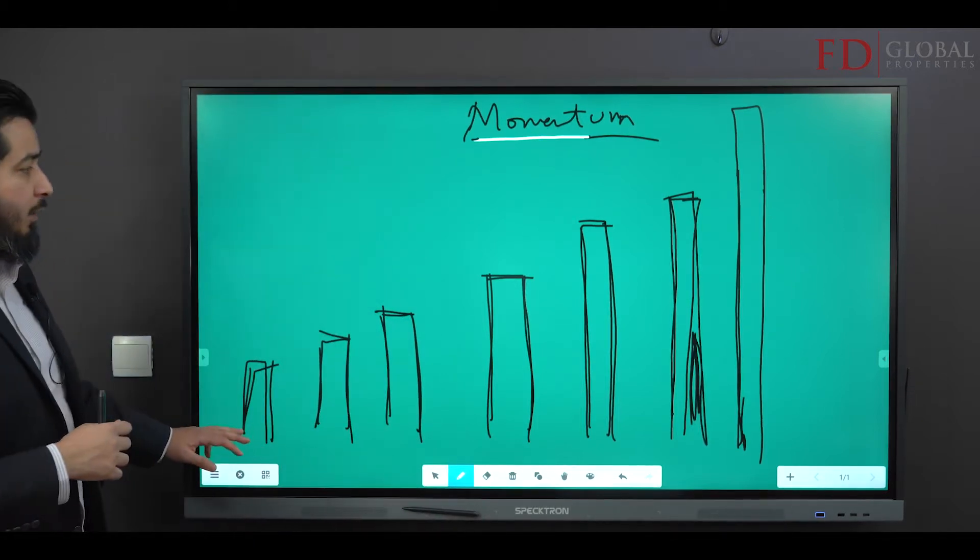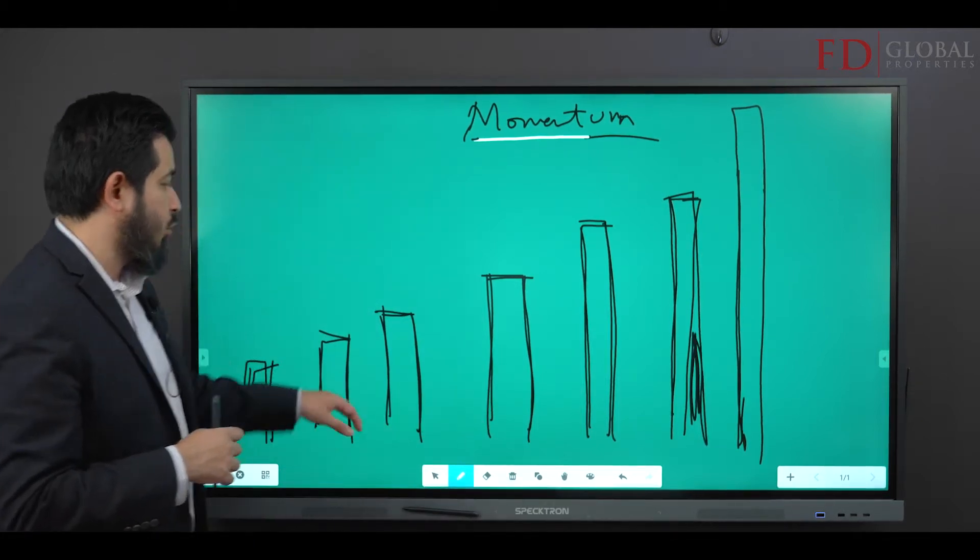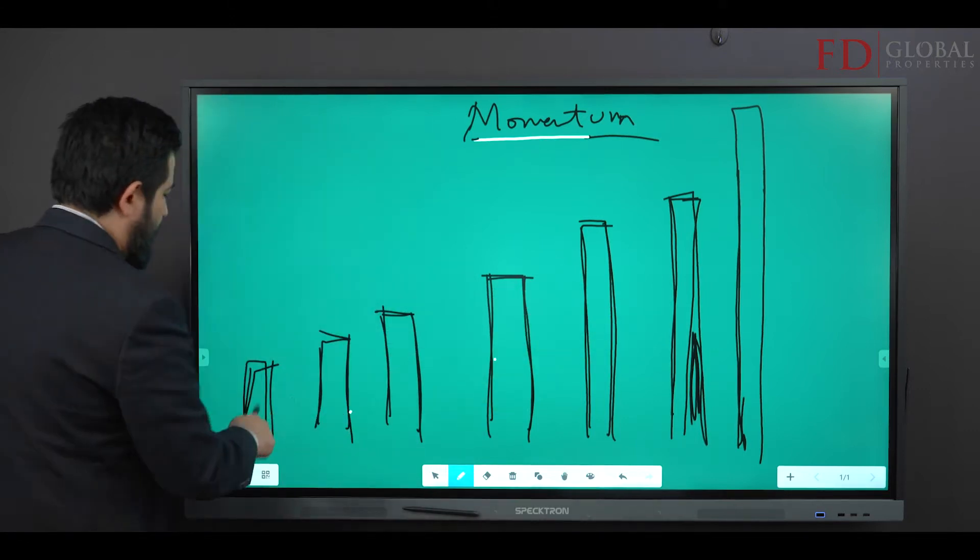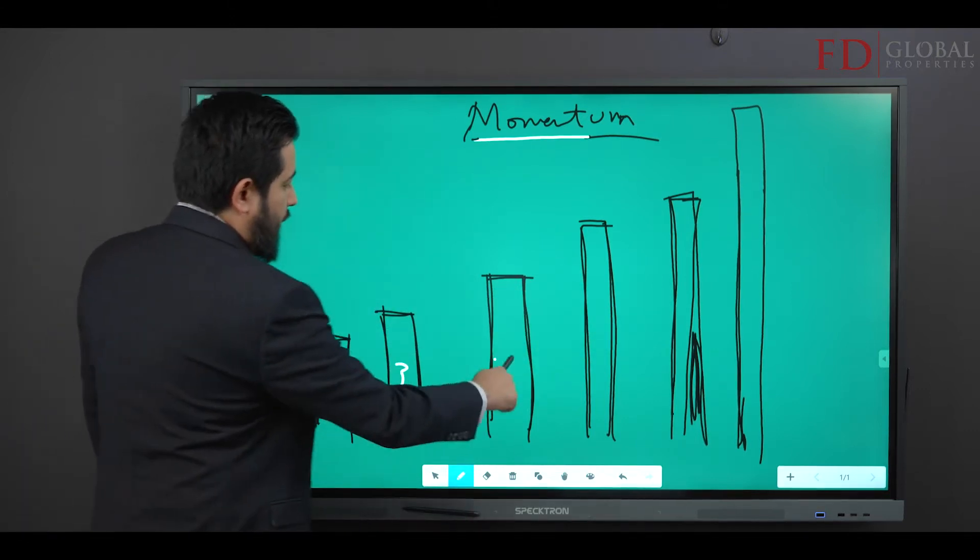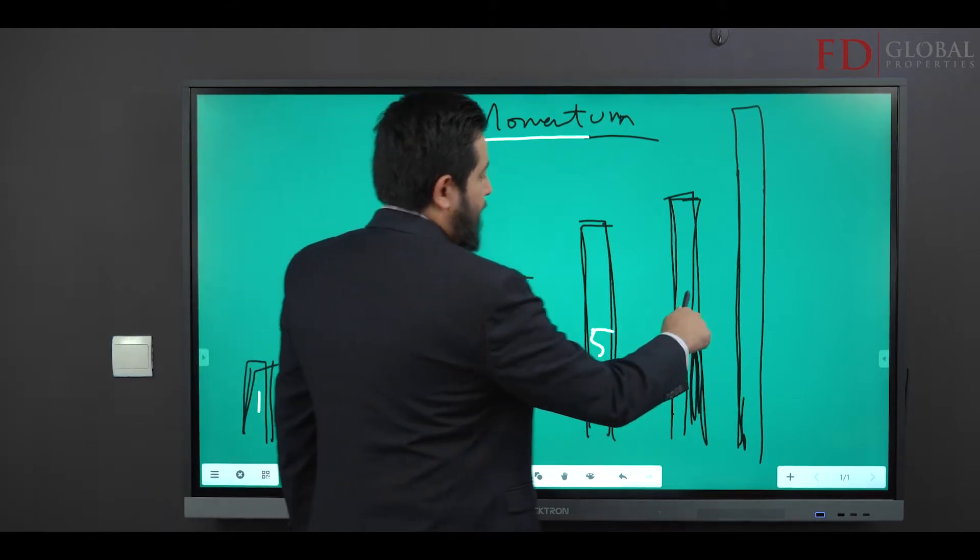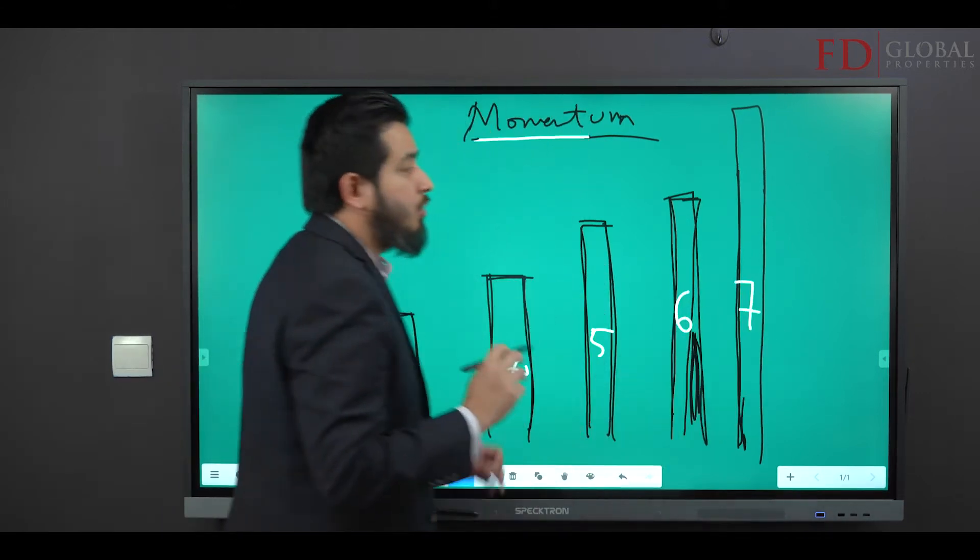Let's imagine this is a set of seven dominoes. One, two, three, four, five, six, seven dominoes, okay.